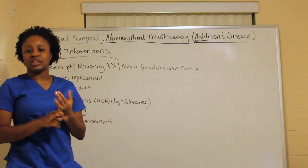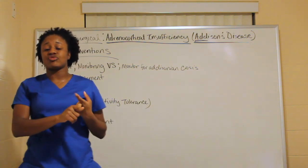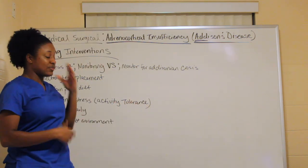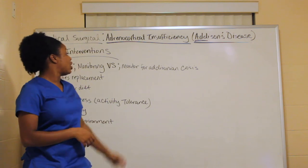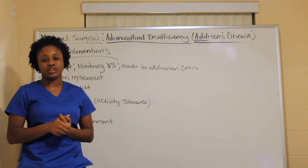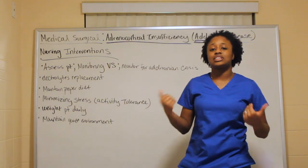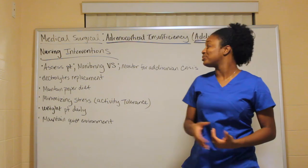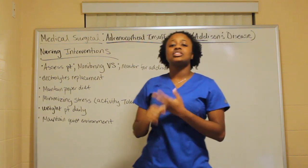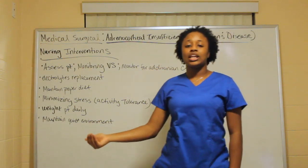For nursing interventions, assess the patient and monitor vital signs — blood pressure, heart rate, respirations tell us if the patient is in distress or going into circulatory shock. Monitor for Addisonian crisis, as vital signs help determine if the patient is going into shock, which is the main complication to prevent. Provide electrolyte replacements, since potassium is high, sodium is low, and glucose is low.